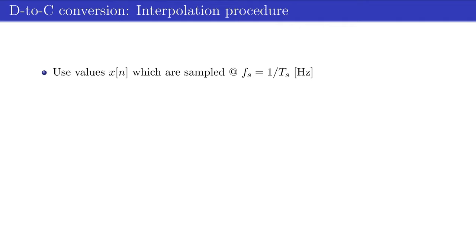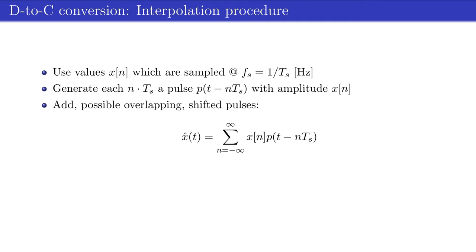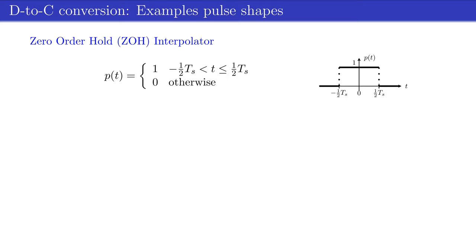Mathematically, the d-to-c conversion can be described by the following steps. Use the values of the discrete time samples x of n, which has been obtained at a sample rate of fs is 1 over ts samples a second, in which ts is the inter-sample distance. Generate for each new position n times ts, a continuous time pulse pt minus nts, with amplitude equal to the value of the discrete time sample x of n. Add possible overlapping shifted and weighted pulses according to the given equation, which results in an approximated continuous time signal. The pulse shape p of t depends on the characteristics of the d-to-c converter.